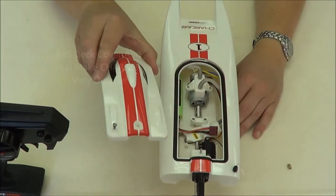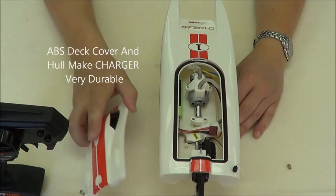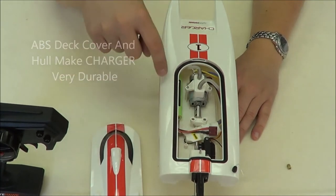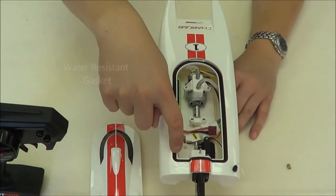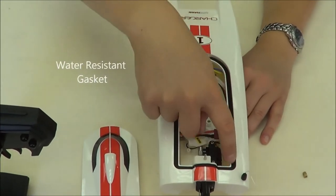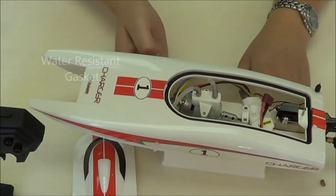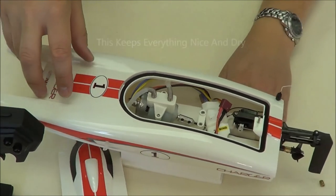If you notice, the canopy cover itself is almost a white lightweight piece. When we open up this boat, you're going to see right away that there's a black seal, a foam-type seal, and that foam seals the top canopy to the rest of the hull of the boat.